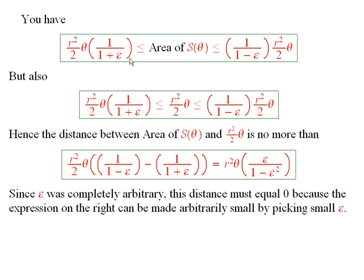But also, see, 1 plus epsilon is bigger than 1, and so this thing is smaller than r squared over 2 times theta, and that's smaller than this thing.